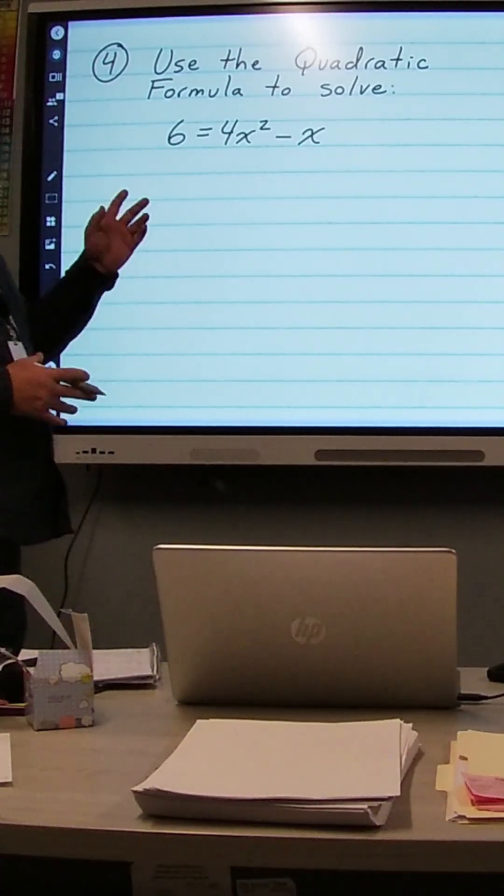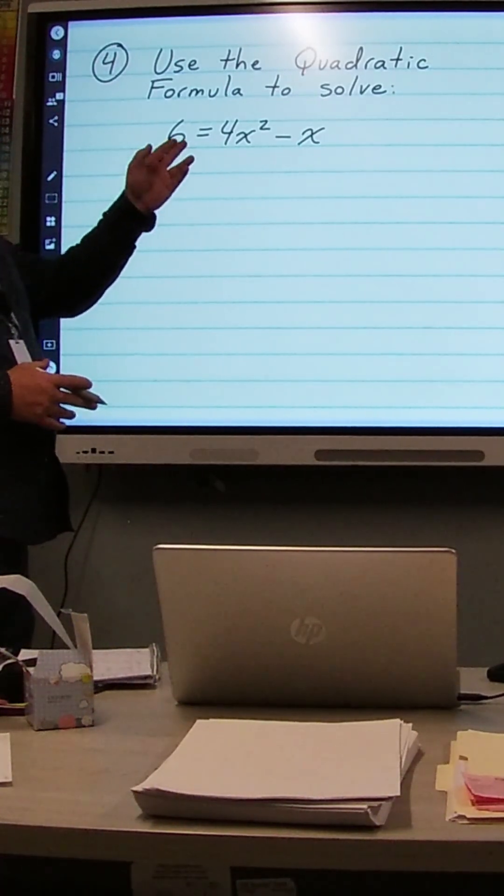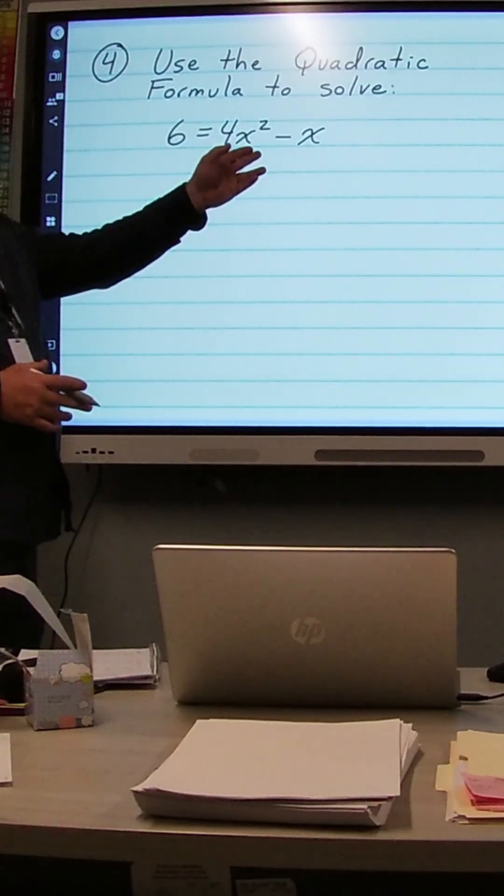In this problem, we're going to use the quadratic formula to solve the equation 6 equals 4x squared minus x.